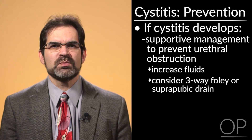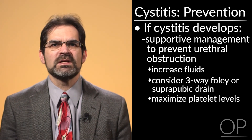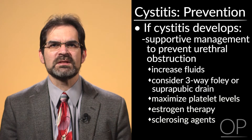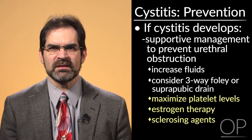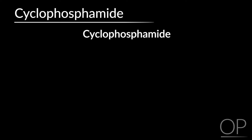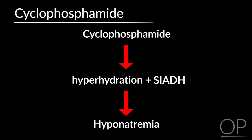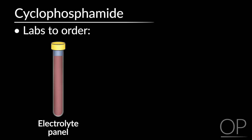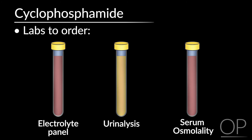Other options include maximizing platelet levels, estrogen therapy, or bladder sclerosing agents; however, those are not middle-of-the-night interventions. Initial night management is to ensure brisk and good urine flow. It's important to know that cyclophosphamide can also cause SIADH, which can lead to potentially fatal hyponatremia when compounded by the hyperhydration and intravenous fluids used to prevent drug-induced cystitis. When managing patients on cyclophosphamide, we check electrolytes more frequently and often check urine and serum osmoles to avoid inadvertently running into SIADH.